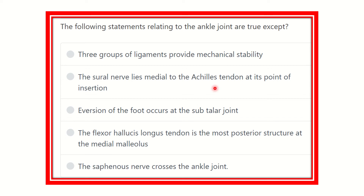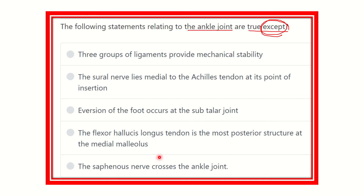Hi everyone, welcome to another question and answer session. The following statement relating to the ankle joint are true except — so we have to find out which is false. The options are: three groups of ligament provide mechanical stability; the sural nerve lies medial to the Achilles tendon at the point of insertion; eversion of the foot occurs at the subtalar joint; the flexor hallucis longus tendon is the most posterior structure at the medial malleolus; and the saphenous nerve crosses the ankle joint.